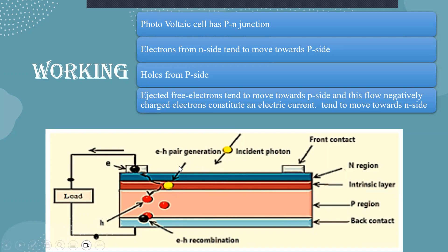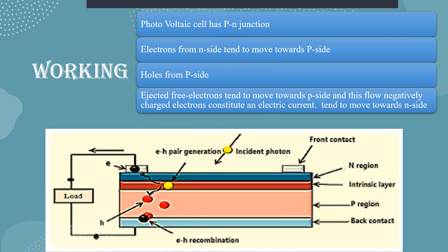When this P-N junction semiconductor material is exposed to sunlight, the sunlight falls on the material and some of the photons dislodge free electrons from their fixed positions. These ejected electrons move towards the P side, creating a flow of negatively charged electrons, which produces an electric current. With a load connected, the combination of hole and electron flow allows sunlight to be absorbed and converted into electric current.